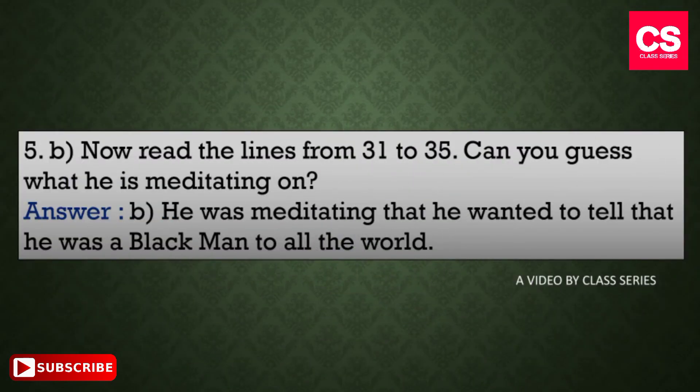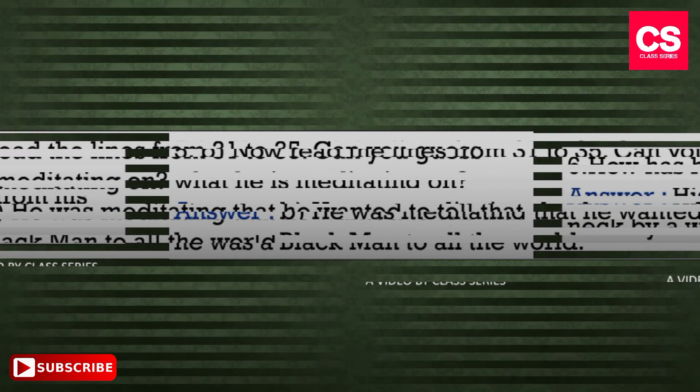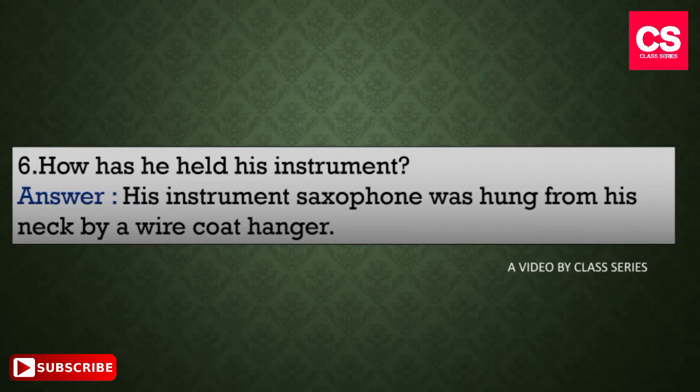Our fifth question, part B: now read the lines from 31 to 35 — can you guess what he is meditating on? The answer: he was meditating that he wanted to tell the whole world that he was a Black man. Our sixth question is: how has he held his instrument? The answer: his instrument, the saxophone, was hung from his neck by a wire coat hanger.